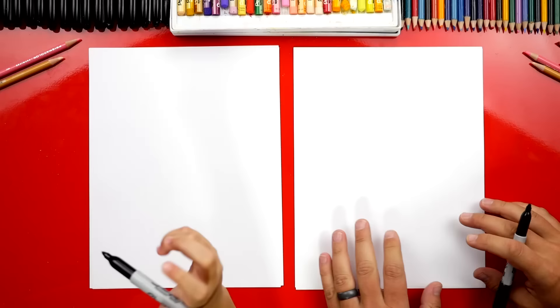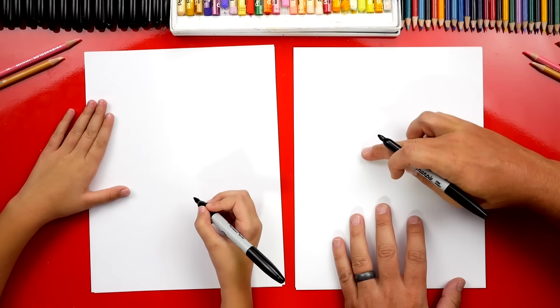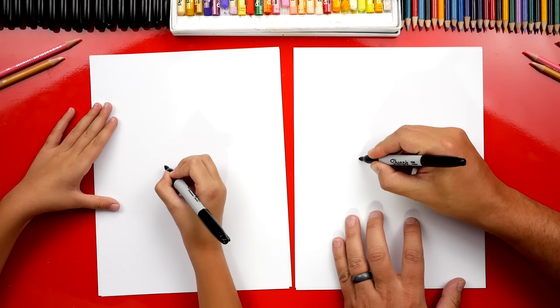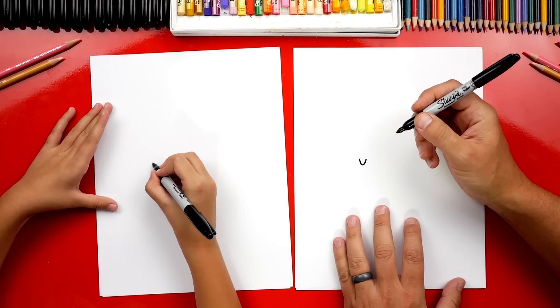We're first gonna draw our goat's nose and we're gonna draw it right here a little to the left but in the middle of our paper. So we're gonna go up to the middle and then a little to the left and then we're gonna draw a little V shape. Right here? Yeah, that's a good spot.